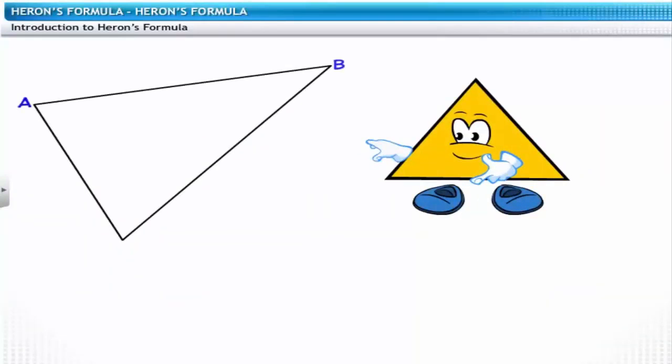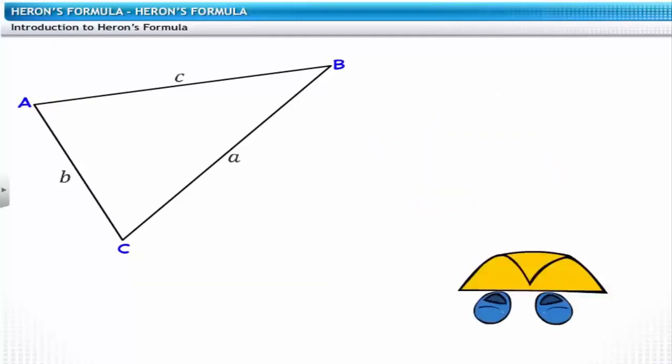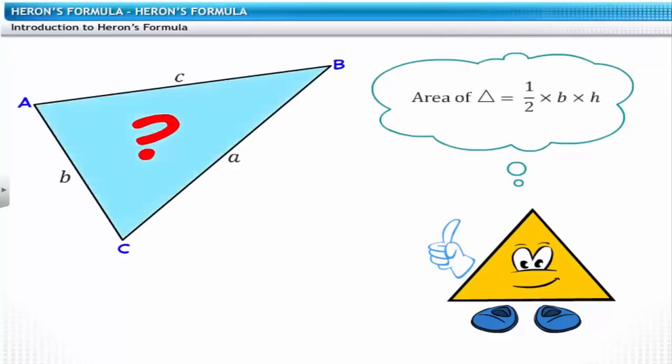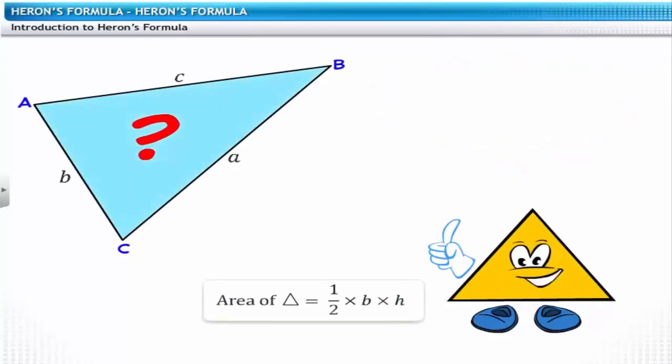Let's consider the triangle ABC. The lengths of its sides are A, B, and C respectively. Can we use the basic formula half base into height to calculate the area of this triangle? The basic formula can be applied only if the base and the height of the triangle are known.